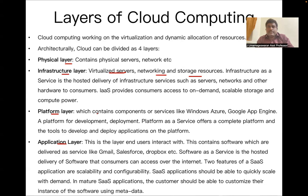The platform layer provides a place to develop and deploy software — it gives components or services like Microsoft Windows Azure and Google App Engine as platforms for development and deployment. The application layer covers what end users interact with — for example, Zoom for recording or video lectures, Google Meet, Microsoft Teams, Photoshop, VLC Player, Windows Media Player, Dropbox, iCloud for storing data.